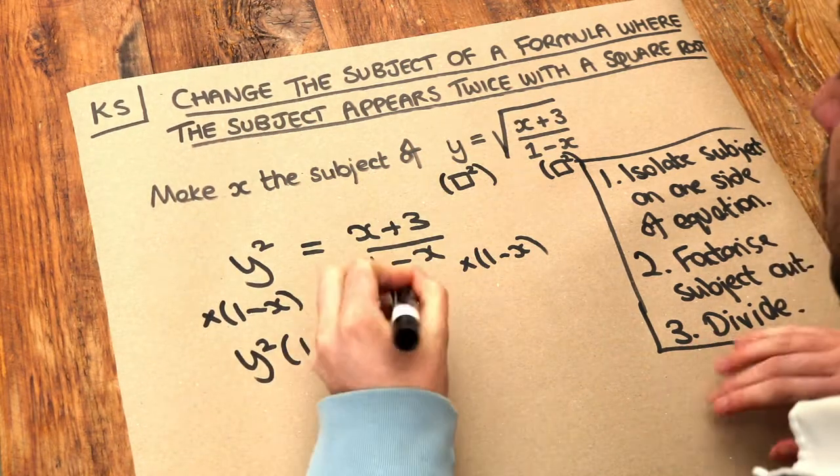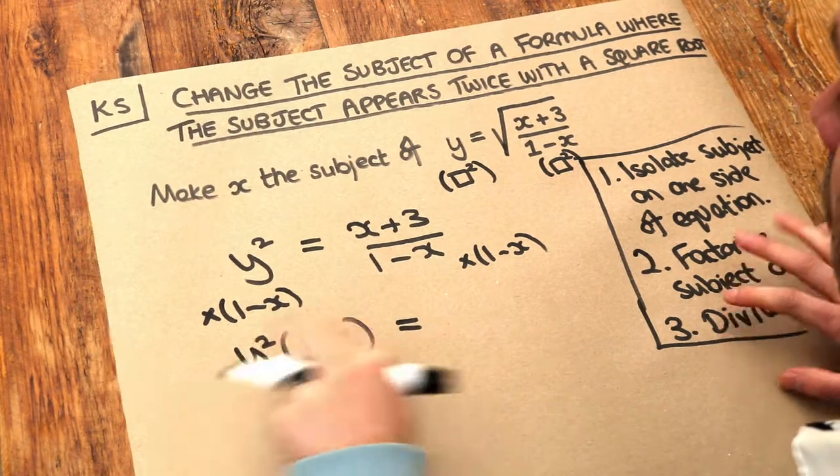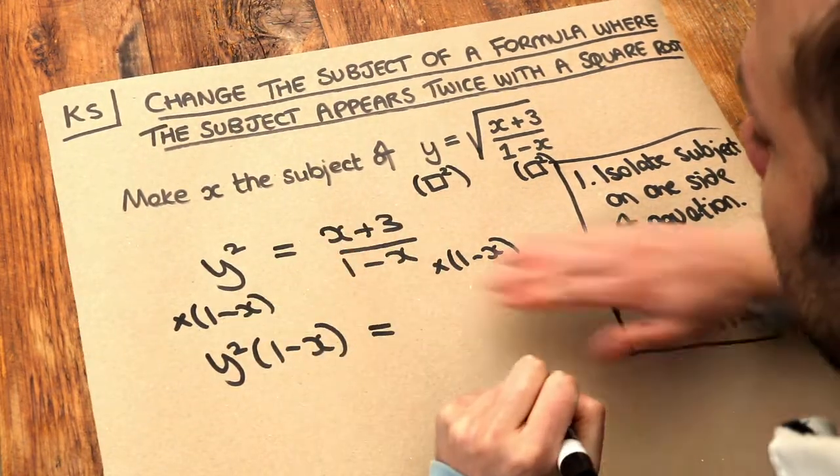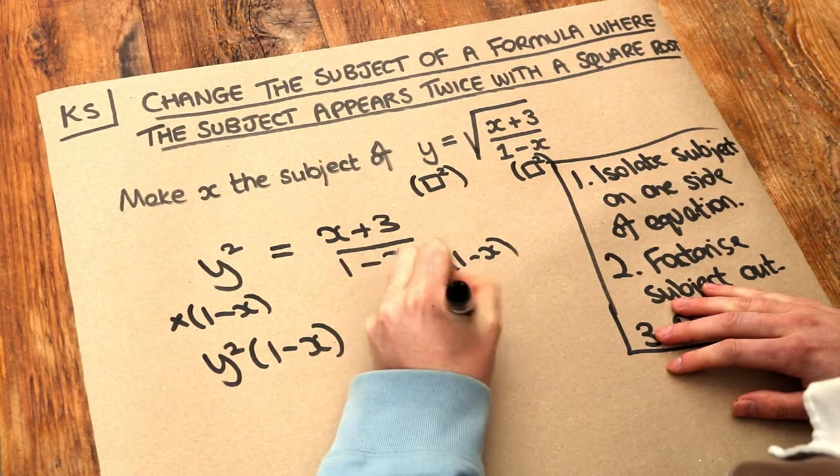The left hand side becomes y squared times 1 minus x. We'll expand out in a second. Don't use a times symbol in algebra by the way, just put things next to each other when you want them to be multiplied together. And then if we times by 1 minus x here, that gets rid of the over 1 minus x, leaving just x plus 3.